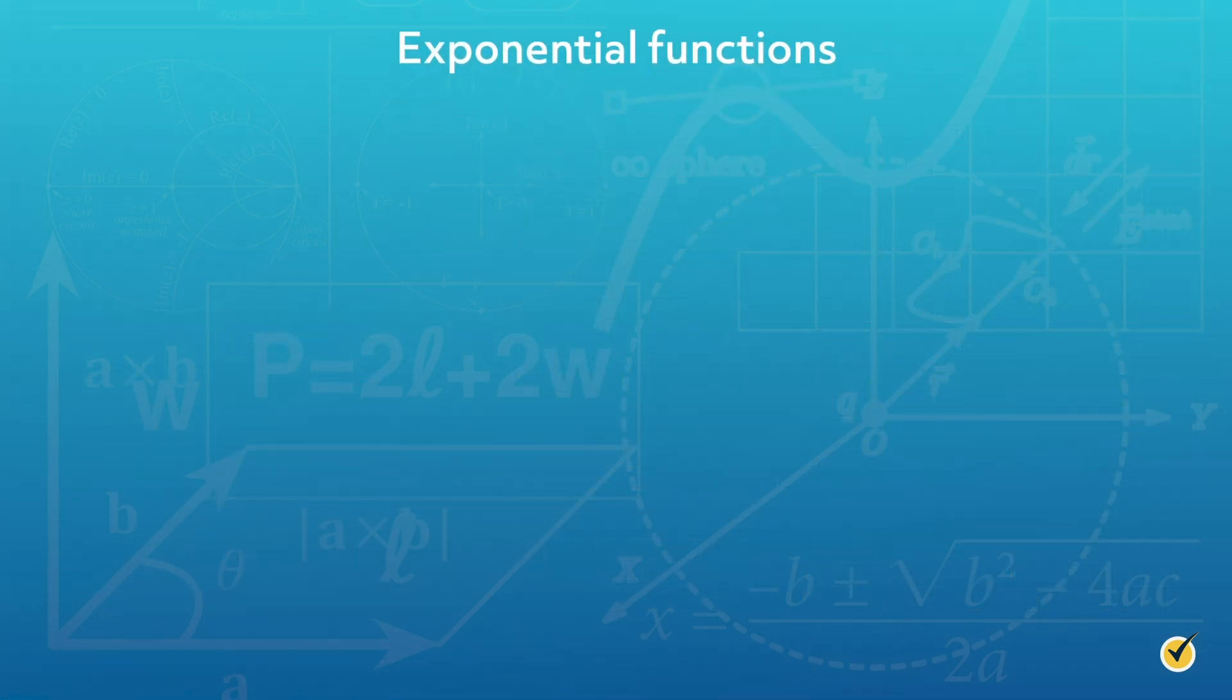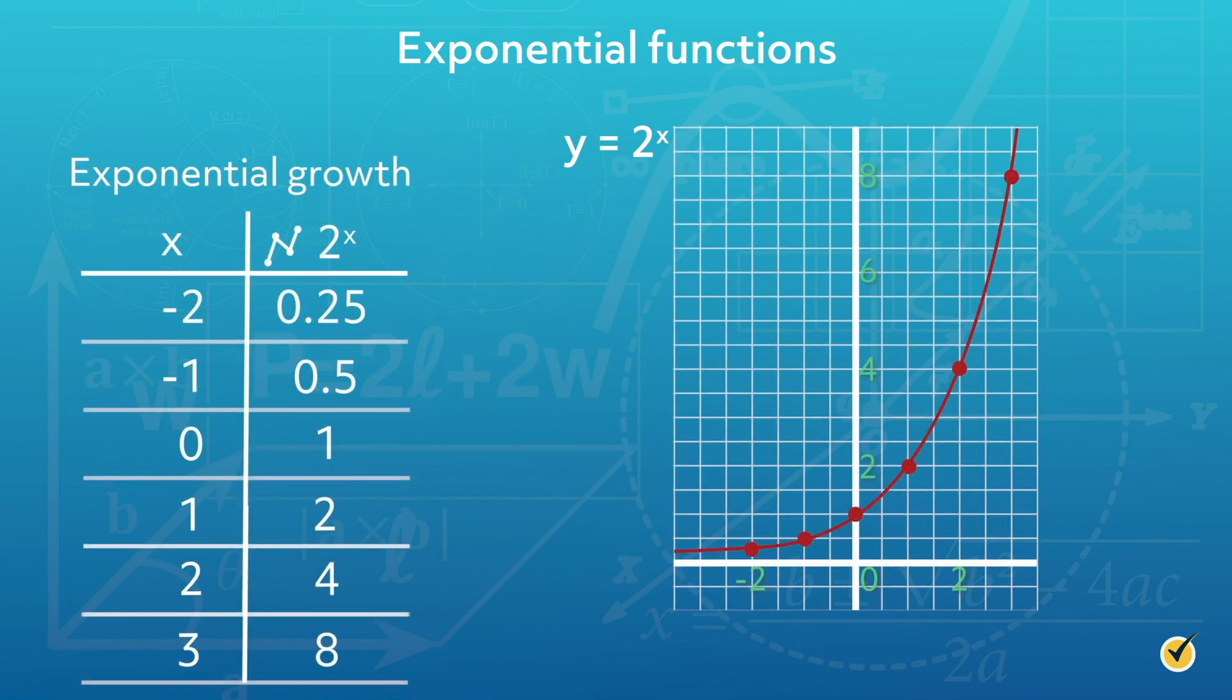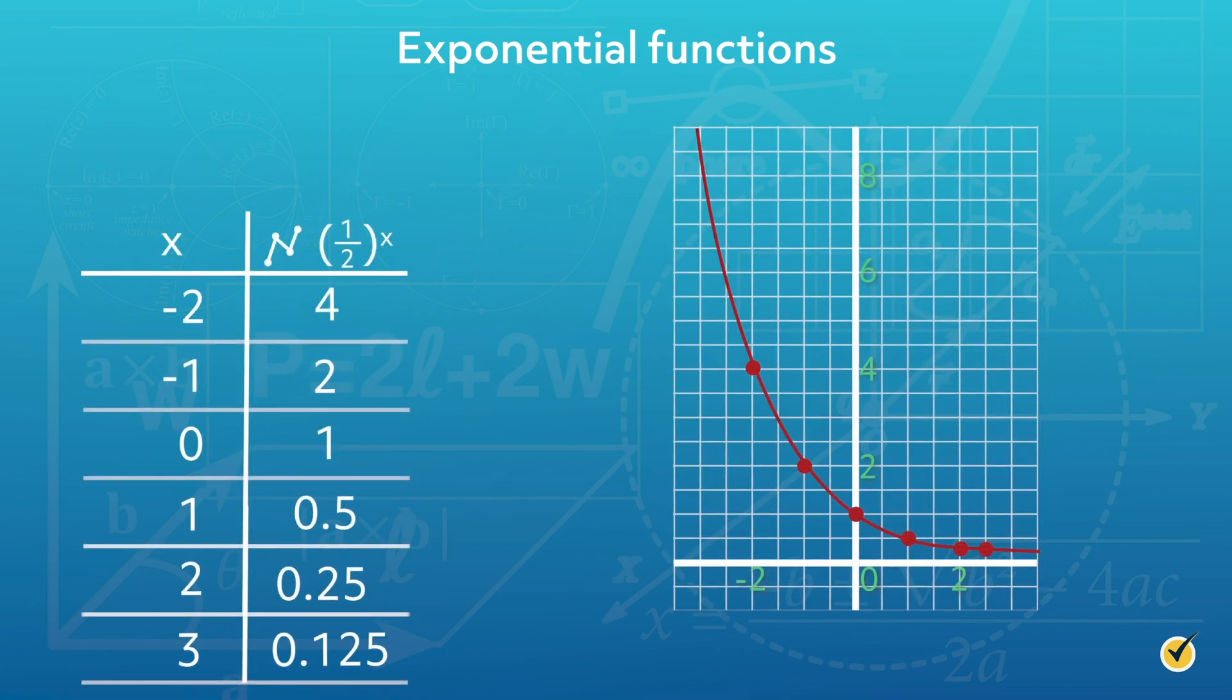Exponential functions are unique in structure because the variable is in the exponent position of the function. The function y equals 2 to the x has a base of 2 raised to the power of x. Exponential growth is the result of raising a base that is greater than 1 to an exponent that is increasing in value. If a fraction between 0 and 1 is raised to an exponent that is increasing in value, the result would be a rapidly decreasing pattern, or exponential decay. Exponential functions are used frequently in science and business applications.